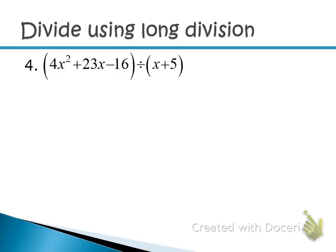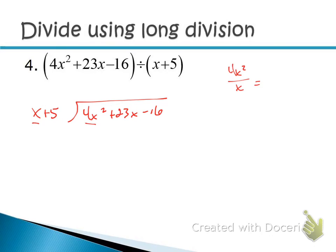Next example: dividing by x + 5. It's in descending order and no missing terms. Same with 4x² + 23x − 16. Divide the first terms: 4x² over x gives 4x. Put 4x up top. Multiply down: 4x times x is 4x², 4x times 5 is +20x. Change the signs. You get 0 and 3x. Bring down the −16.